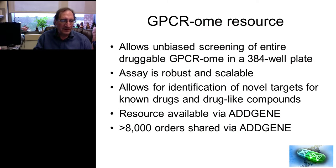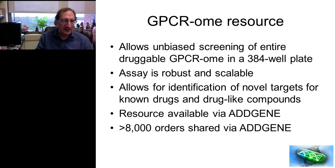This is now available as a resource. It allows unbiased screening of the entire druggable GPCR-ome in a single 384-well plate, is robust and scalable, and allows identification of novel targets for known drugs and drug-like compounds. We've made this resource available via Addgene so it's open source. To date, around 8,000 orders have been shared via Addgene — my lab doesn't make any money from this; it's provided to the scientific community at a nominal fee through Addgene.